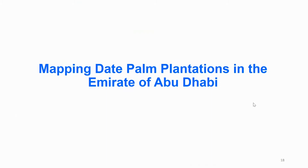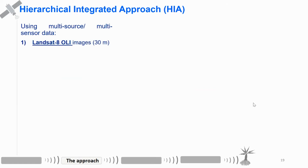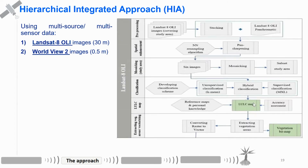Now I will go to the mapping of date palm plantation in the emirate. For mapping, we ran a hierarchical integrated approach using multi-source and multi-sensor data. We used Landsat 8 images and also WorldView 2 images. For Landsat, we used it for land use/land cover classification and also to create a vegetation bitmap. We ran pre-processing stacking and also a spatial enhancement to enhance the spatial resolution of Landsat from 30m to 15m. Then we ran a hybrid classification including unsupervised and supervised classification, in order to classify the images into seven classes of land use/land cover.